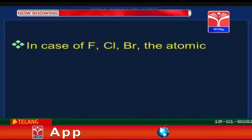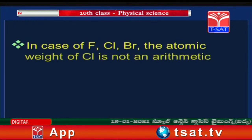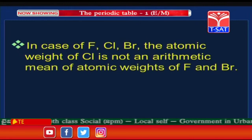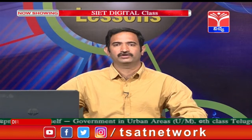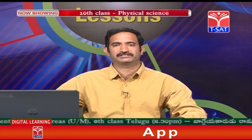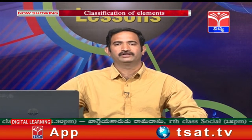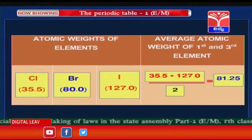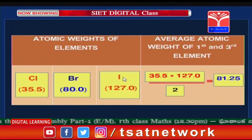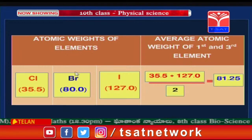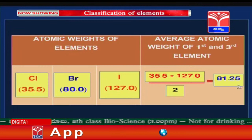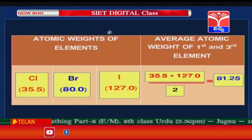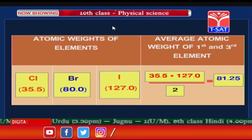In the case of fluorine, chlorine, and bromine, the atomic weight of chlorine is not the arithmetic mean of the atomic weights of fluorine and bromine. For chlorine and iodine, the average value is 81.25, but bromine's actual atomic weight is 80 — they do not match. Such limitations were observed later.